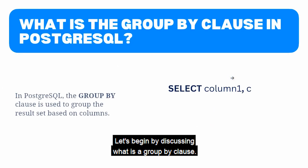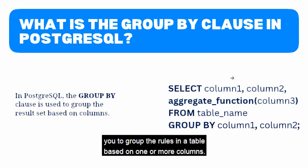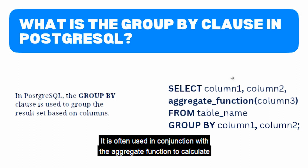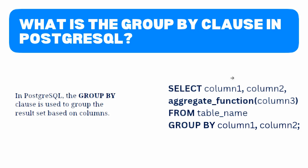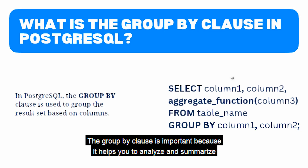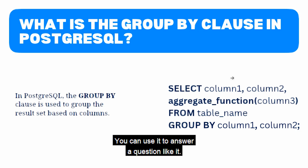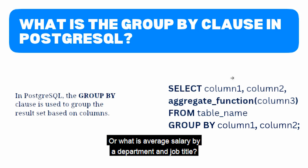The GROUP BY clause is a powerful tool in PostgreSQL that allows you to group rows in a table based on one or more columns. It is often used in conjunction with aggregate functions to calculate summary statistics for each group. It helps you analyze and summarize large amounts of data efficiently — for example, finding total sales by product or average salary by department and job title.